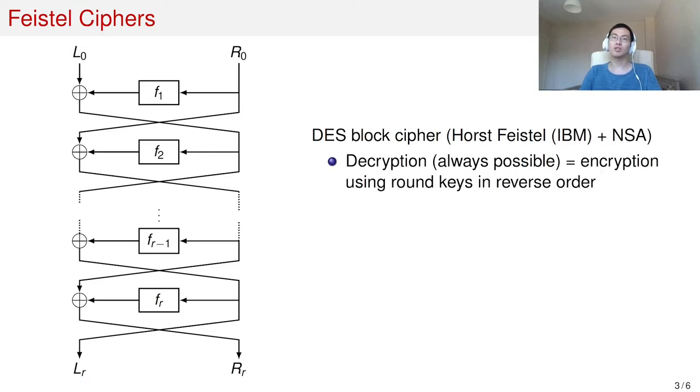A special property of Feistel ciphers is that decryption is always equal to encryption using round keys in the reverse order. This means the underlying round functions do not need to be invertible, which gives much more flexibility when choosing those round functions.